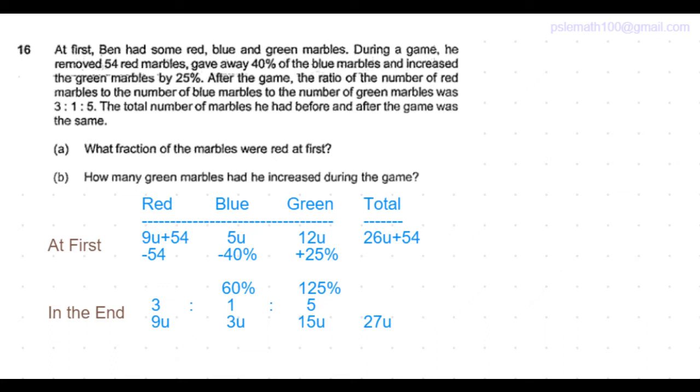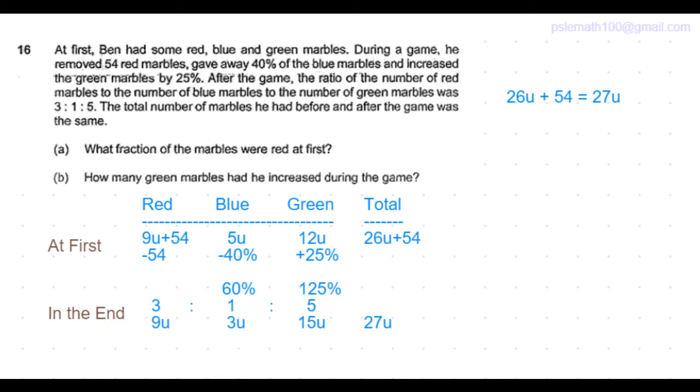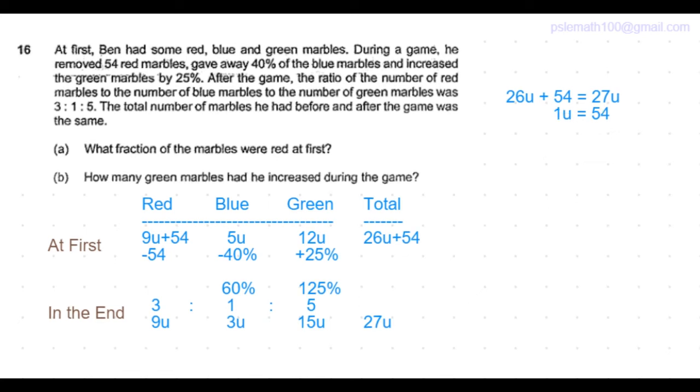The question says the total number of marbles he had before and after the game was the same, which means 26 units plus 54 equals 27 units. From there, we get the value of 1 unit to be equal to 54.